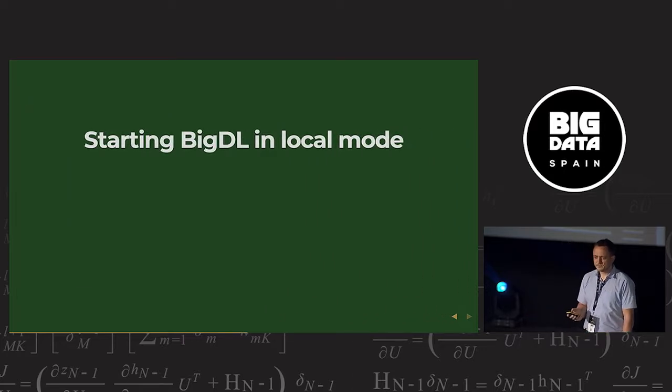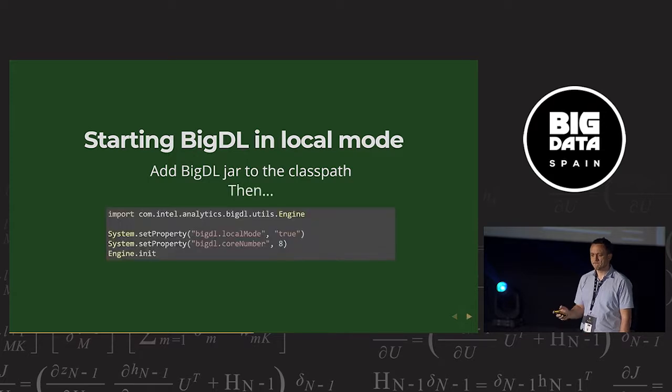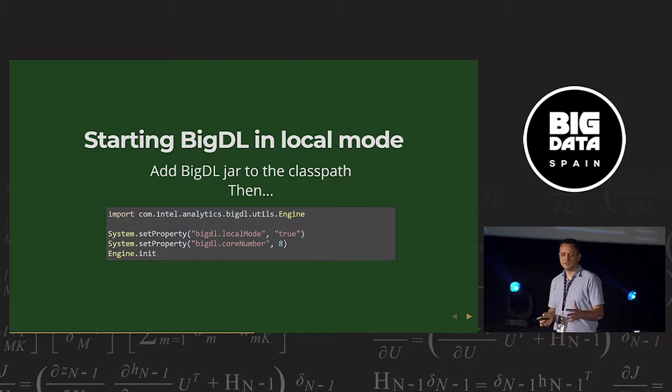To start Big DL in local mode, you add Big DL jar to the class path, of course. And then you need to set the local mode property. That's Java system property. Big DL local mode true. And you tell it how many cores you want to give it. And then call this special function engine init, which will then calculate the number of executors that you have and how to distribute the work. And this engine class, for example, is put, this is one of the things I didn't like in Big DL. Engine class is put into util package. It's kind of, you have to use it to start Big DL. I don't think it belongs there, but it's a minor detail.